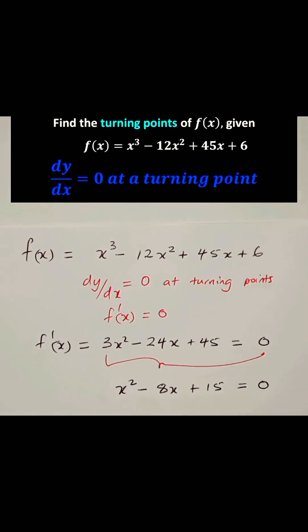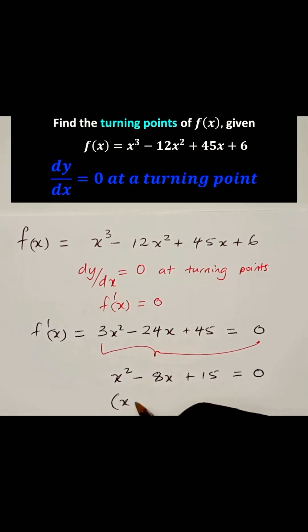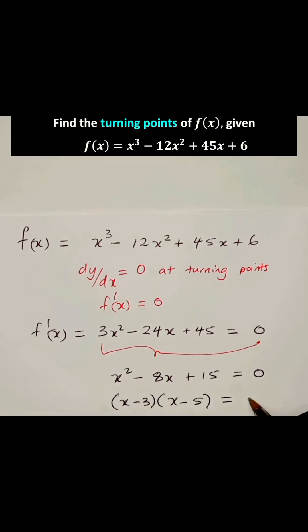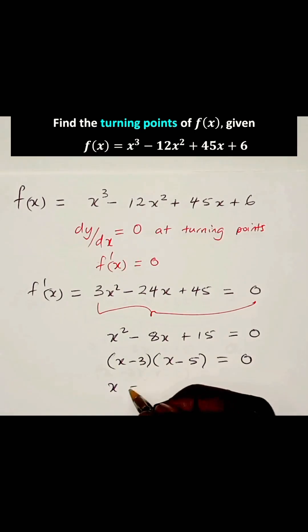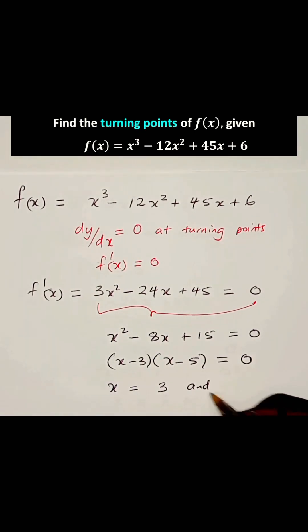Now, let's factorize this by the method of inspection. We have (x - 3) and (x - 5), that's equal to 0. Now, we realize that x is equal to 3 and 5 at those turning points.